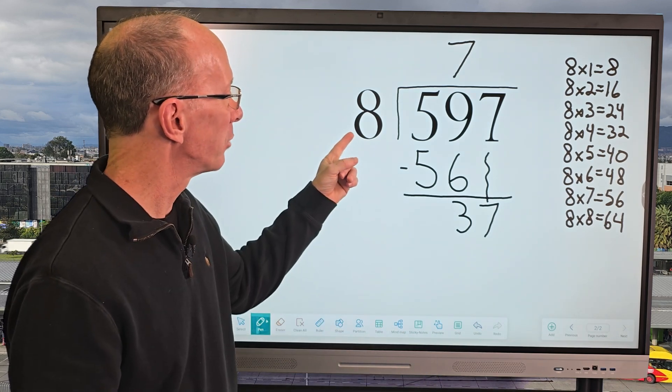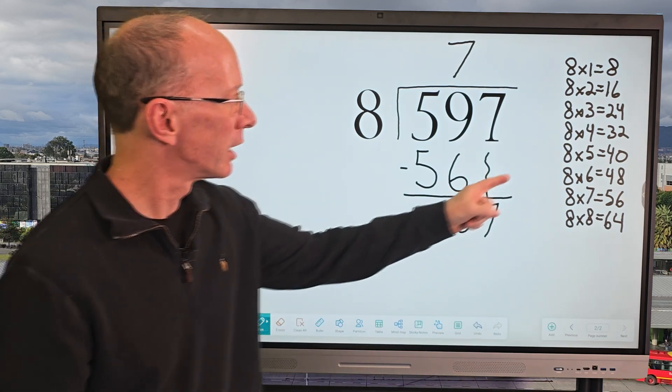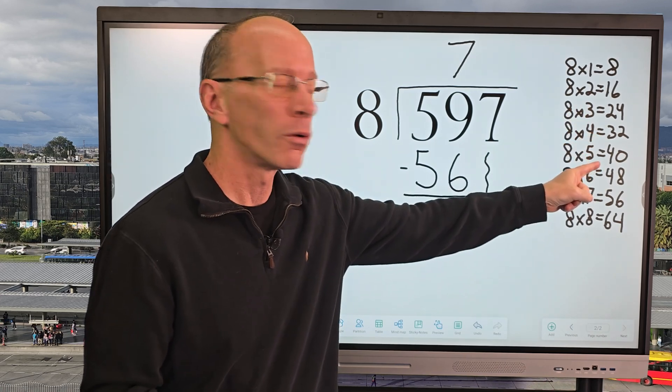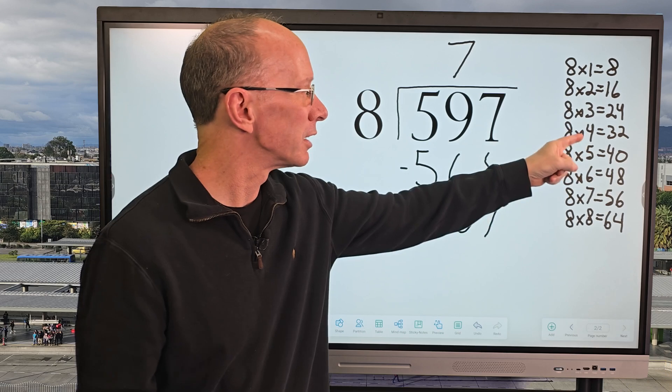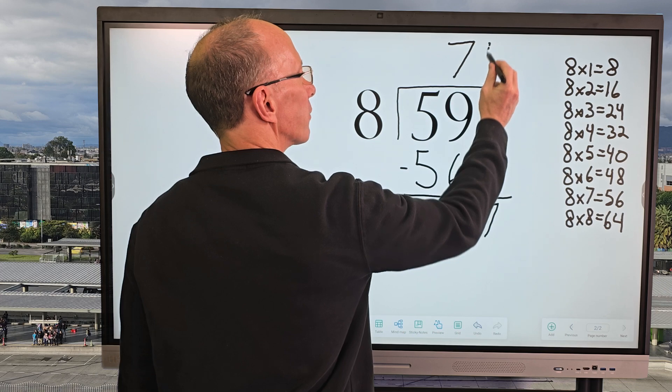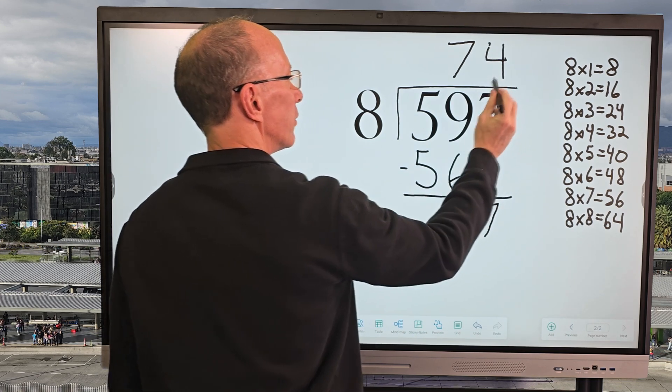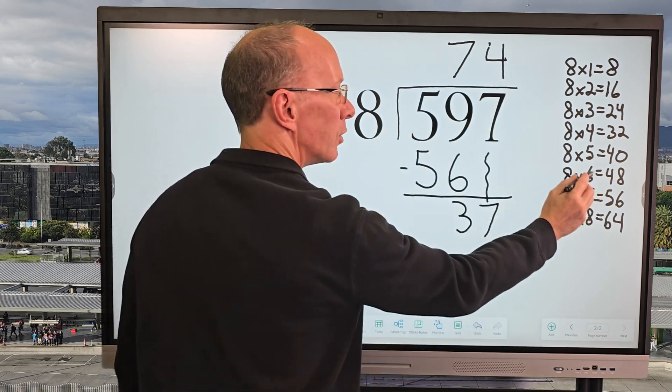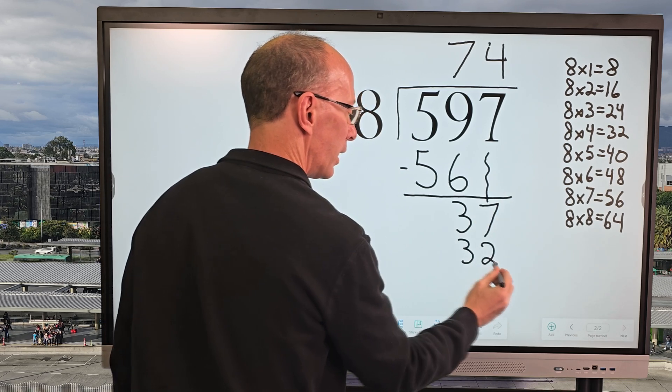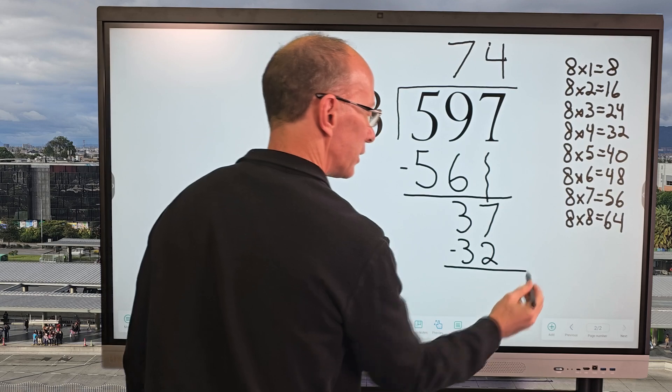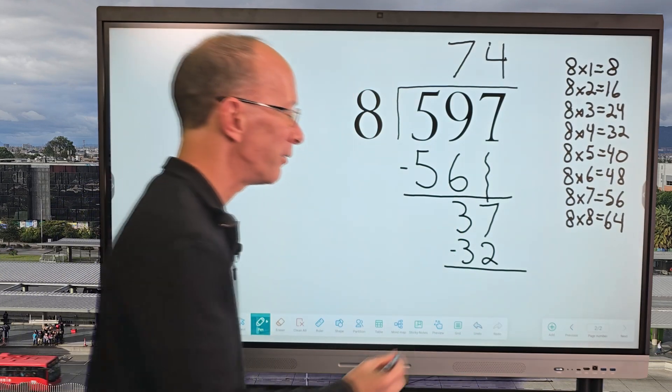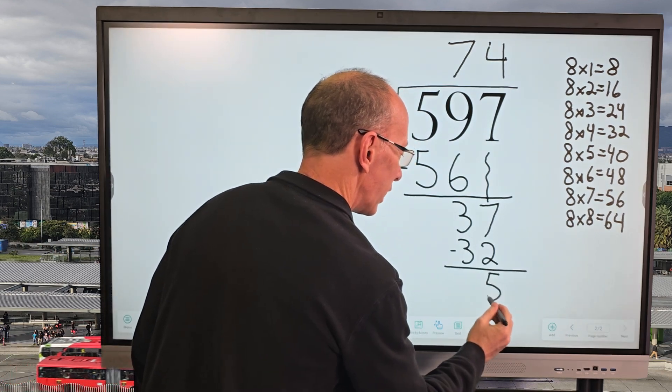So now how many times can I put 8 into 37? Let's look for the number 37 here. We have 32, and then we have 40. 40 is too big, so we're going to stick with 32. So I'm going to take 8 times 4. I'm going to put the 4 right here. And then 4 times 8 would be 32, just like that. And then I'm going to go ahead and subtract. So I have 7 minus 2 equals 5. So I go ahead and put 5 right there.